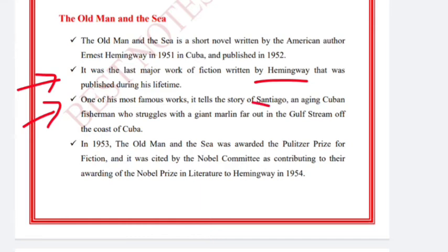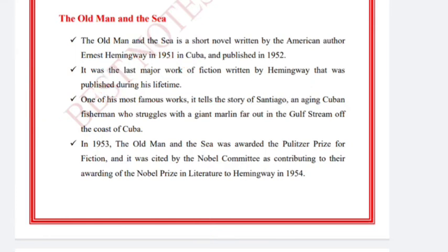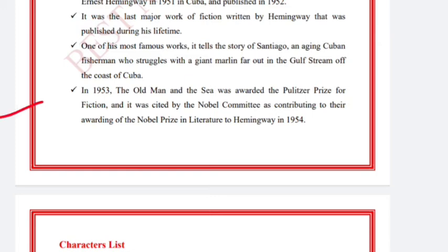It tells the story of Santiago, a Cuban fisherman who struggles to catch a giant Marlin far out in the Gulf Stream off the coast of Cuba. In 1953, 'The Old Man and the Sea' was awarded the Pulitzer Prize for fiction, and it was cited by the Nobel Committee as contributing to their awarding of the Nobel Prize in Literature to Hemingway in 1954.